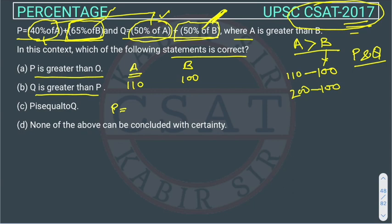What P value will we get from this? P will be 40% of A. The 40% of this will be 44 plus 65% of B, so this will be 65. The total will be 109. What will be the value of Q? Q will be 50% of A, so this will be 55.